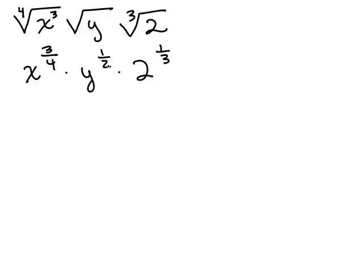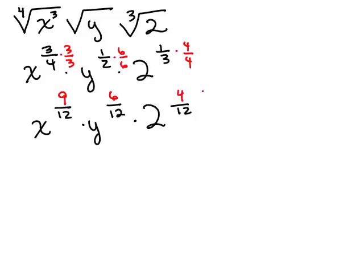We've got for denominators 4, 2, and 3. So the common denominator is going to be 12ths. We need to write each of those fractional exponents with a 12 in the denominator. 3 4ths, I'm going to have to multiply the top and bottom by 3 over 3, so it gives you 9 12ths. For 1 half, I need to multiply that fraction by 6 over 6, that's going to give me 6 12ths. And for 1 3rd, I need to multiply by 4 over 4, so I get 4 12ths. Now they're all 12ths.